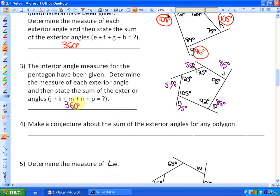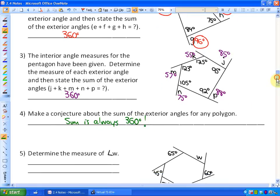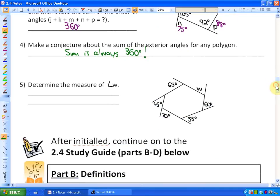Question 4 says, make a conjecture about the sum of the exterior angles for any polygon. And here is the idea. It's that the sum, for the exterior angles of a polygon, is always 360 degrees. Which is kind of interesting. We'll apply that knowledge.